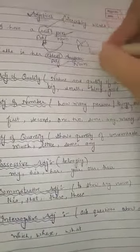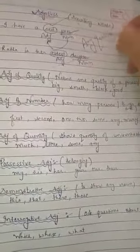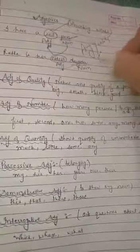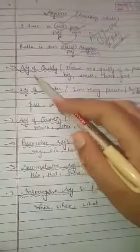Any quality, we can say in short, any quality is adjective. But quality of which thing? Noun. Now what are the types of adjectives? Adjective of quality.